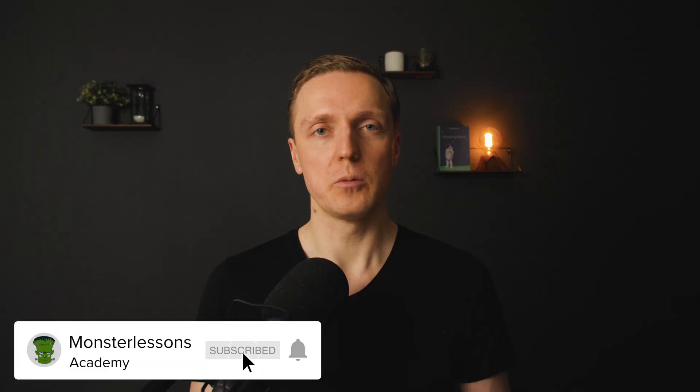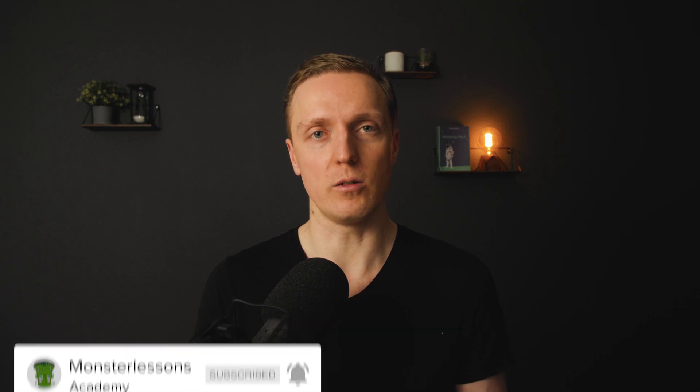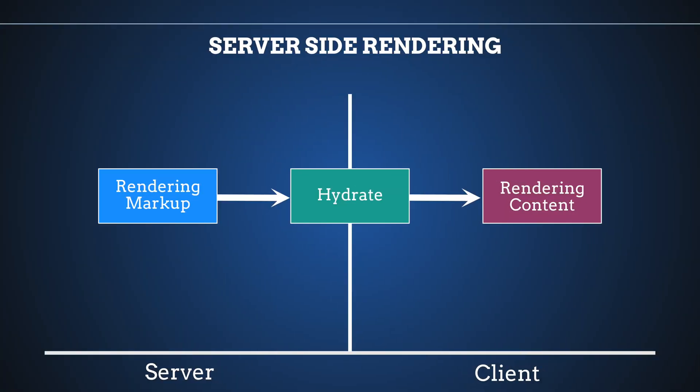We have client-side rendering inside React — just JavaScript with React that we are rendering on the client. This is 90% of all applications that we implement. Secondly, we have server-side rendering. We simply take React and render it first on the backend with Node.js, and only then on the client. The server generates markup from our React application and renders it on the page, then provides all the data it used in a global window object to the client.